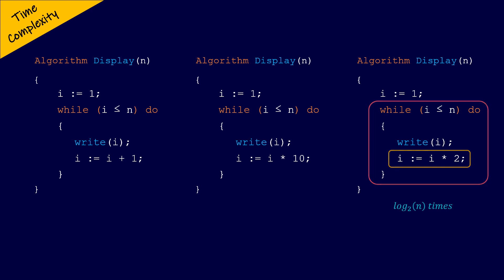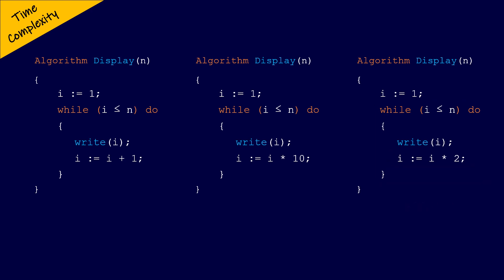Remember, the time complexity depends on the number of times the primitive operations are performed by an algorithm. Therefore, the time complexity of the while loop depends upon the number of times the while loop executes.